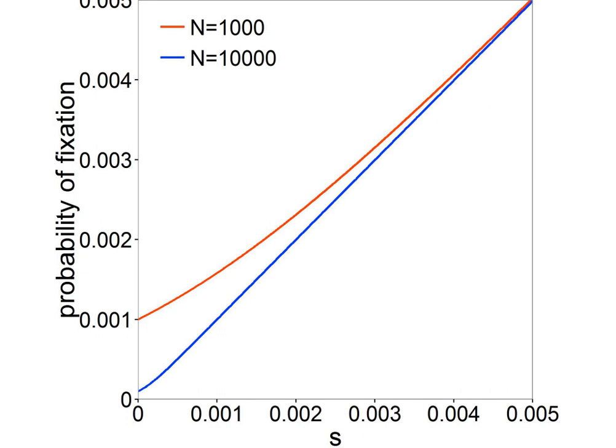Takeda classified evolution under the fixed model based on the product of Ne and the variance in the distribution of S. A large product corresponds to adaptive evolution, an intermediate product corresponds to nearly neutral evolution, and a small product corresponds to almost neutral evolution. According to this classification, slightly advantageous mutations can contribute to nearly neutral evolution.